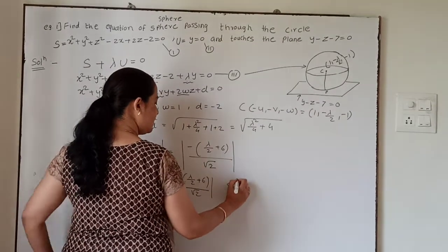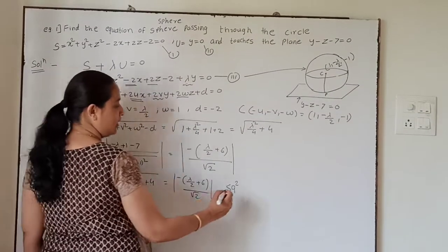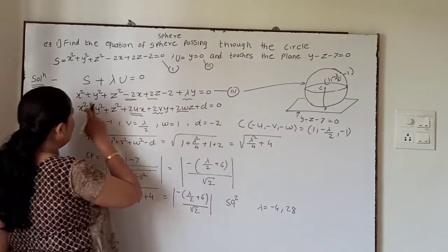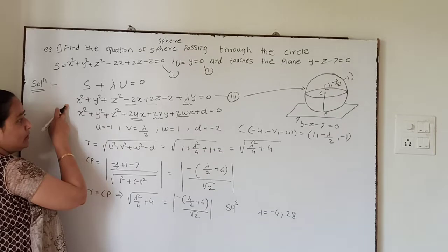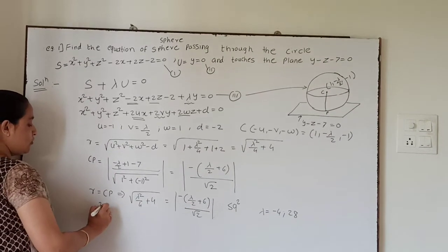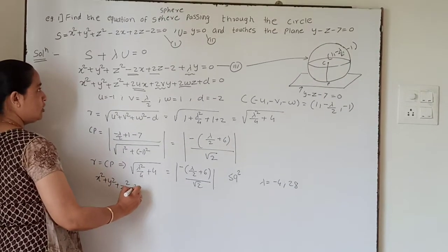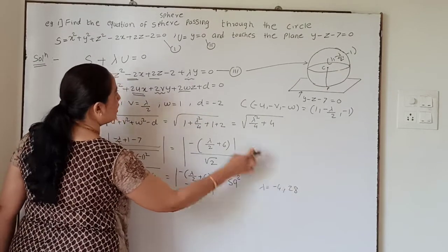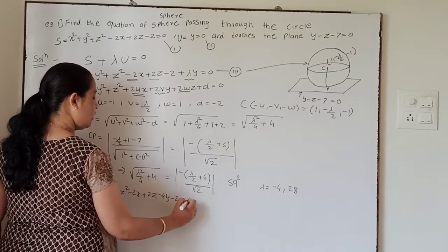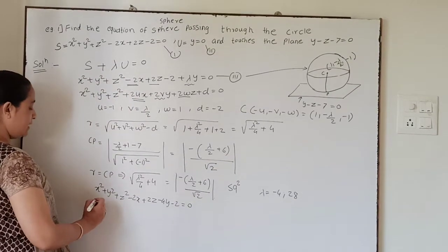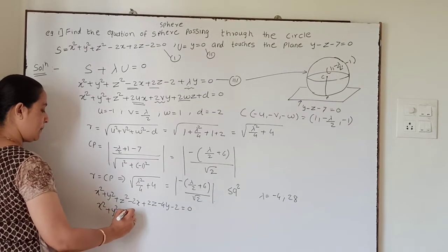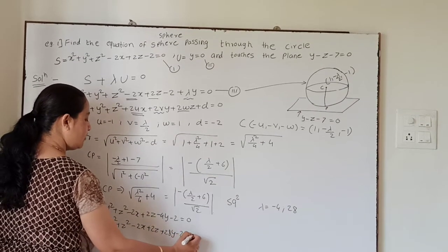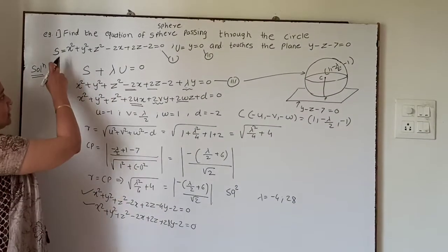Squaring both sides and solving the equation, we get values of λ as −4 and 28. Substituting λ = −4 into equation 3 gives the first sphere: x² + y² + z² − 2x + 2z − 4y − 2 = 0. Substituting λ = 28 gives the second sphere: x² + y² + z² − 2x + 2z + 28y − 2 = 0. These are the required spheres passing through the circle.